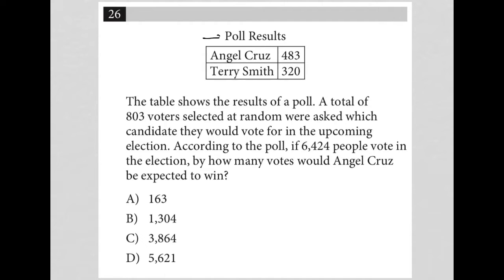This question starts off by providing some poll results. We see that Angel Cruz has 483 most likely votes, and Terry Smith has 320 votes. The table shows the results of a poll — a total of 803 voters selected at random were asked which candidate they would vote for in the upcoming election. If 6,424 people vote in the election, by how many votes would Angel Cruz be expected to win?